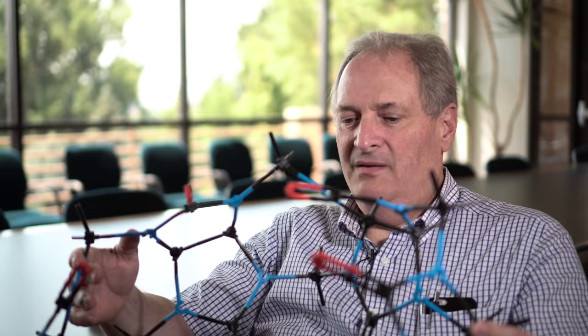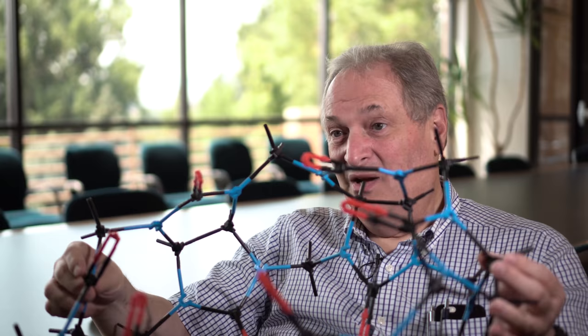This is a cucurbituril. This is one of our favorite molecules. Cucurbits are pumpkins, and you can see it's pumpkin-shaped. Like a pumpkin, it's hollow, and what people envision doing with these—well, one of the things they envision doing is putting things inside the pumpkin.